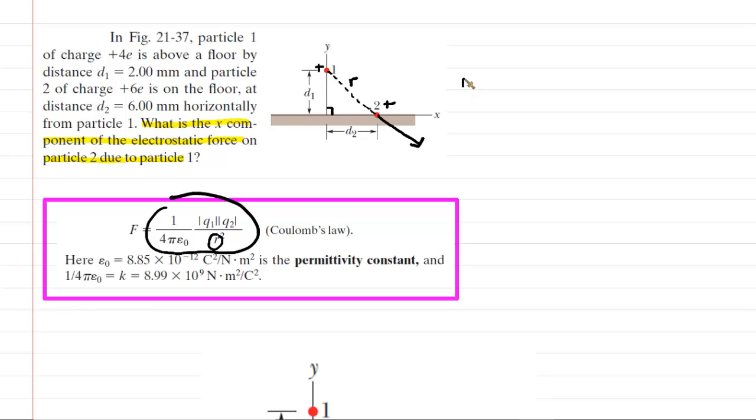We would have r squared is equal to d1 squared plus d2 squared. Nice and easy. We'll plug in the values for d1 and d2. We can see that d1 is 2 millimeters.